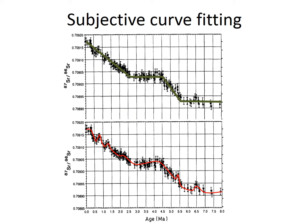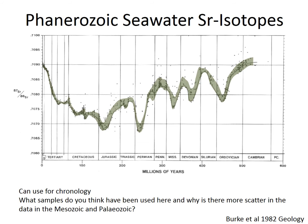A word of caution when interpreting data: looking at the same figure in different ways, you could say nothing really happens over a certain period and draw a straight line through all the error bars. Or you could interpret every wiggle and say there's an anomaly — a little pulse of weathering or a changing source. It's one of the things with geoscience data that interpreting a cloud of data points can be quite subjective.